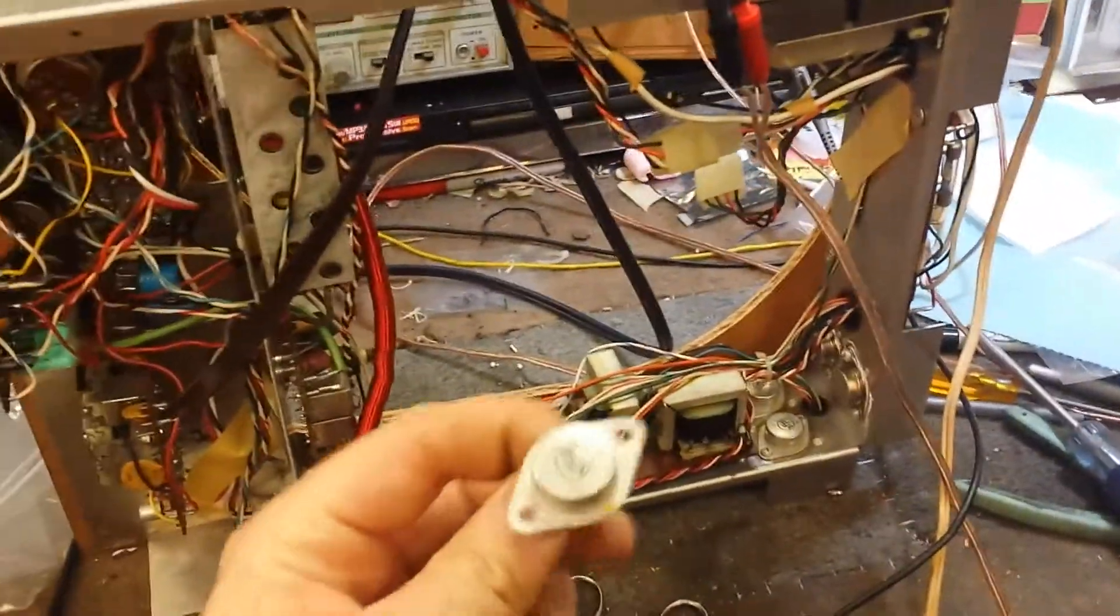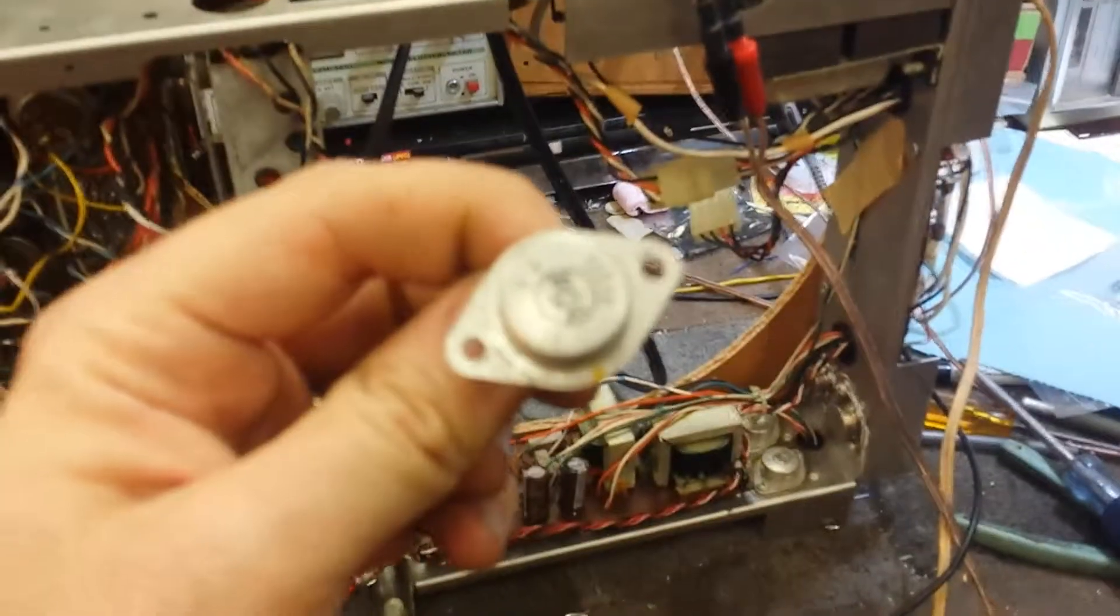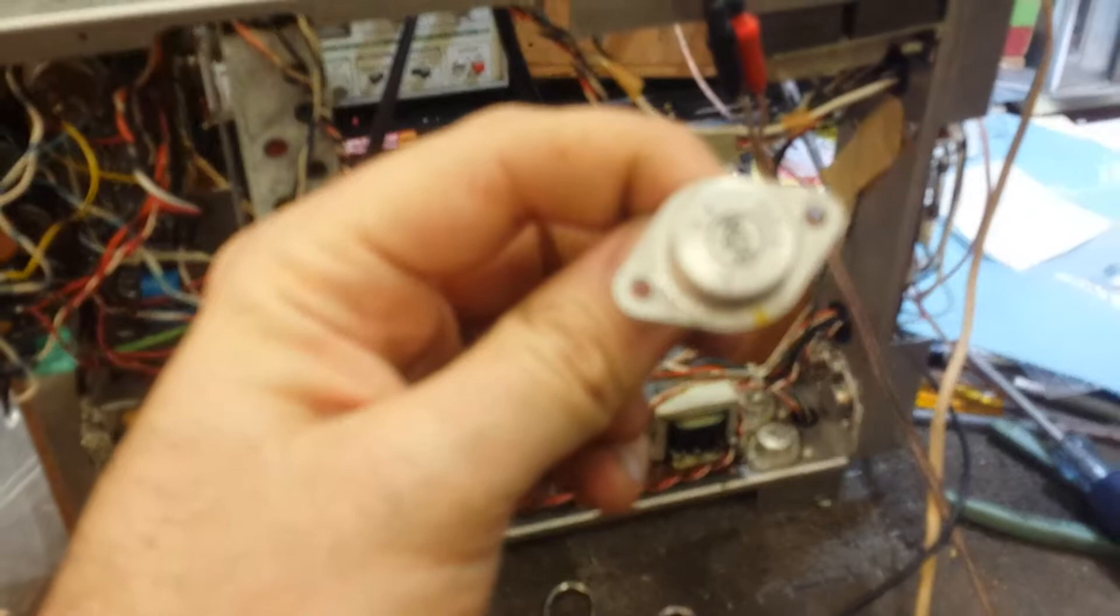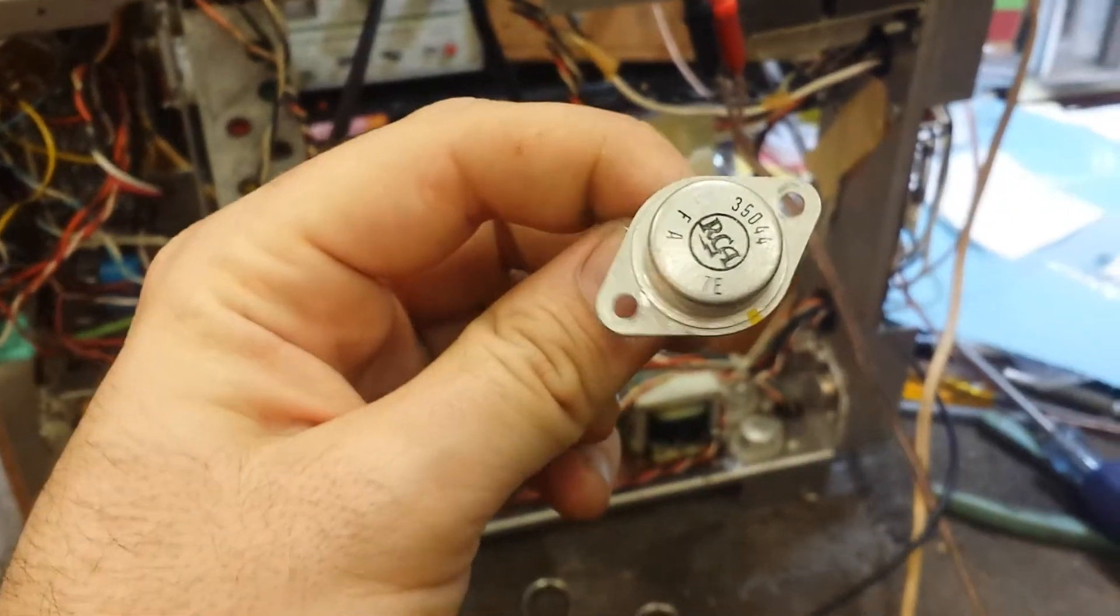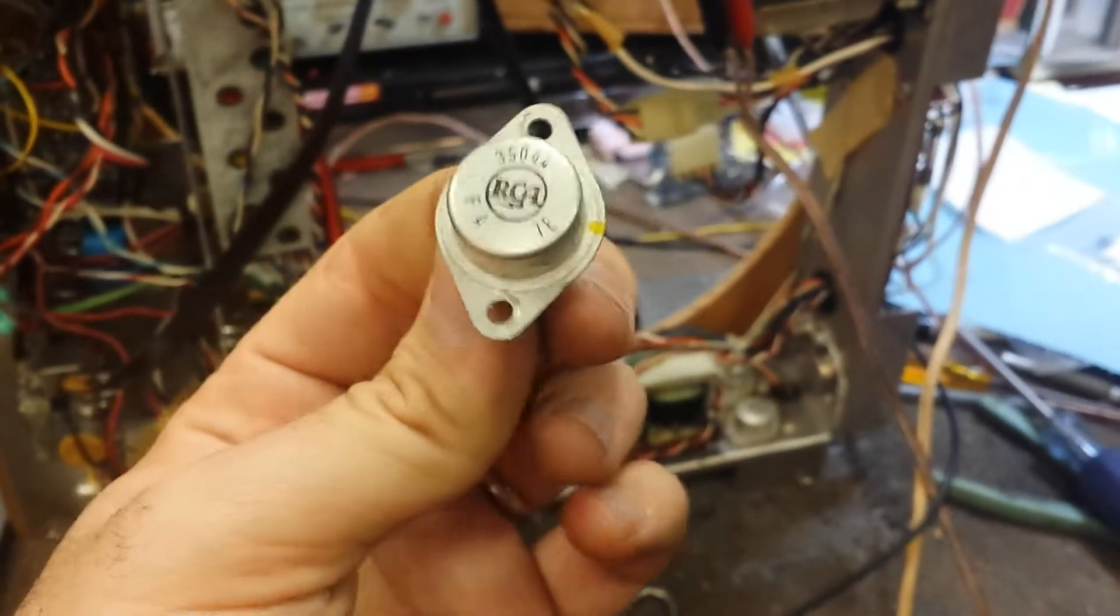As you may know, the older KLH machines use these RCA type devices. The 350-44 is a very common thing you see. It's a PNP device, it's Germanium.